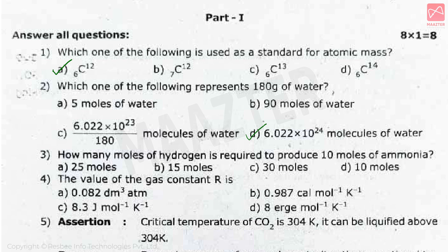The next question: how many moles of hydrogen are required to produce 10 moles of ammonia? The correct answer is 15 moles. This is a stoichiometry equation related question. The equation is N2 + 3H2 gives 2NH3. So, 3 moles of H2 divided by 2 moles of ammonia, multiplied by 10 moles of ammonia, gives 15 moles of H2.